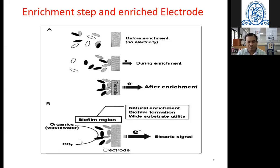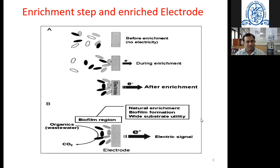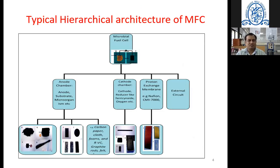From diagram B, you can understand how organic waste from wastewater converts into CO₂, H⁺ ion concentration, and electrons. This is a biofilm region where organic waste is converted into electrons naturally. Some researchers have used a mediator — an electron acceptor — as a medium to enhance electron flow and power generation. That is why MFC is categorized into two types: mediator MFC or mediator-less MFC.